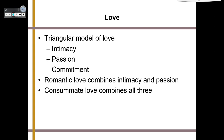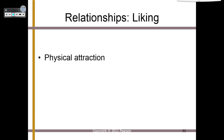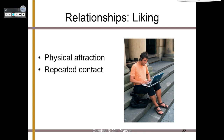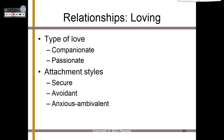When talking about love, psychology uses the triangular model of love, which says there are three key components: intimacy, passion, and commitment. Romantic love combines intimacy and passion, while consummate love combines all three. Before you love somebody, you've got to like them — liking requires first physical attraction and then repeated contact. It also helps if you have very similar interests and ideas. We also know that there are certain attachment styles.